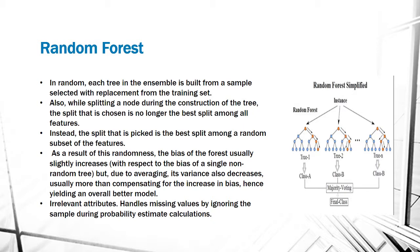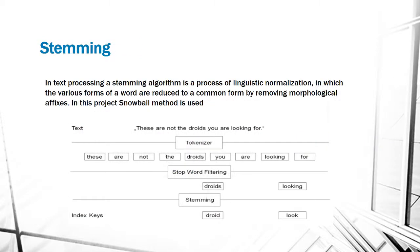Stemming in text processing: a stemming algorithm is a process of linguistic normalization in which the various forms of words are reduced to a common form by removing morphological effects. In this project we have used snowball stemmer. Given below is an example of a text like a sentence: 'these are not the droids you're looking for.' After stemming we'll have some keywords like 'droid' and 'look.'